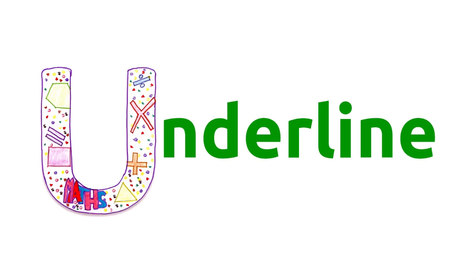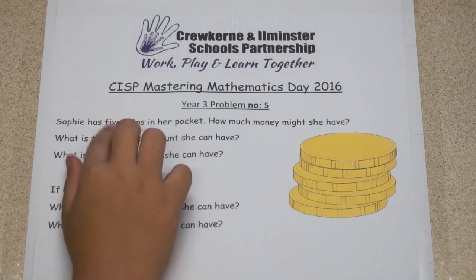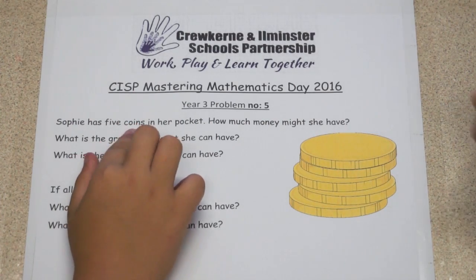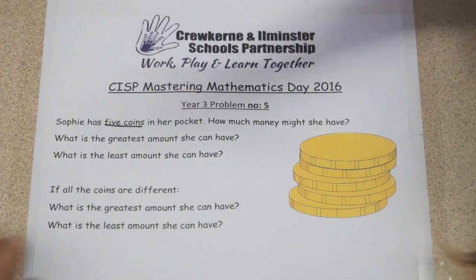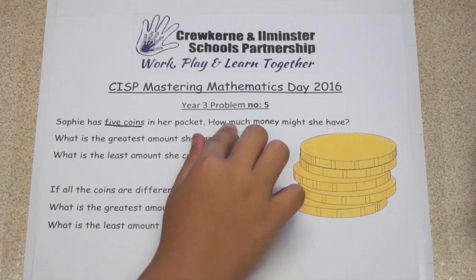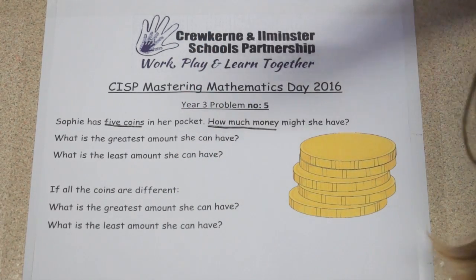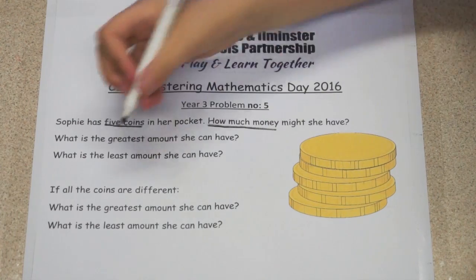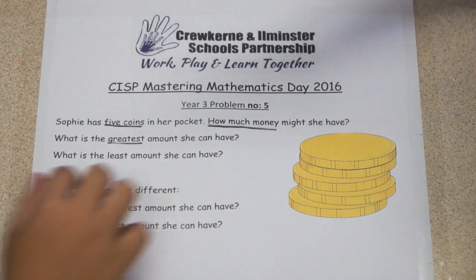U is for underline important information. Let's underline the key information. First we have to underline 'five coins', then 'how much money', 'greatest amount', and 'least'.